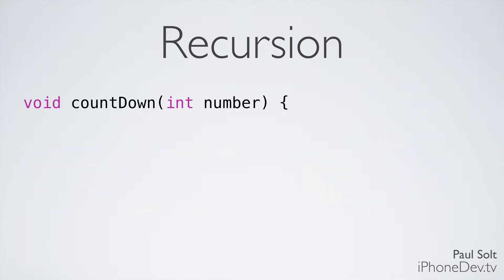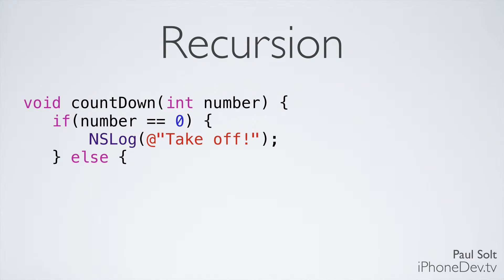Let's take a look at some of the code. I'm going to create a new function called countdown. It's going to have a void return type, so it's not going to return any values. It's going to take a single parameter, an integer, which is the number — our current digit on the countdown timer. Our base case is going to be when it's 0, so when number is equal to 0, using the double equal sign for equality.